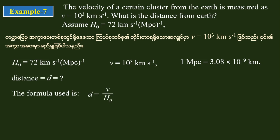From Hubble's Law: v is equal to H₀ times D. Therefore D is equal to v divided by H₀.